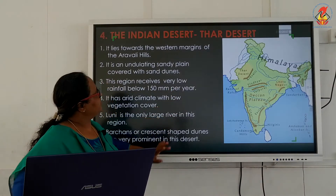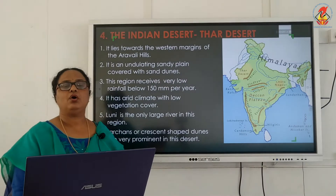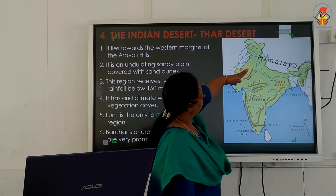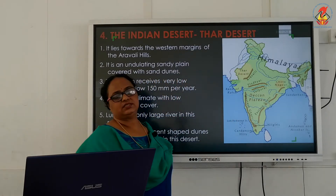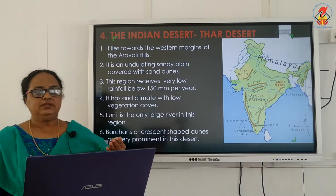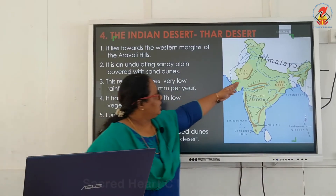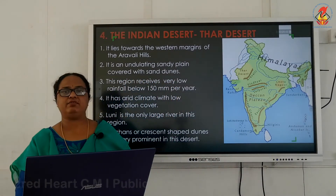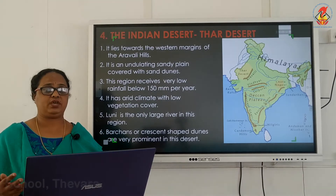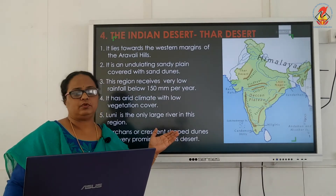The Indian desert, also known as the Thar desert, lies towards the western margin of the Aravalli range in Rajasthan. It is an undulating sandy plain covered with sand dunes, and it receives very little rainfall—below 150 millimeters per year—resulting in an arid climate with low vegetation cover.